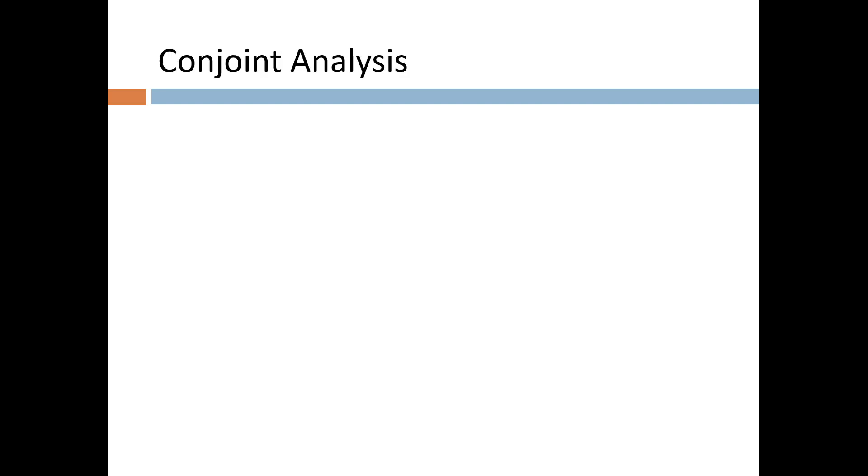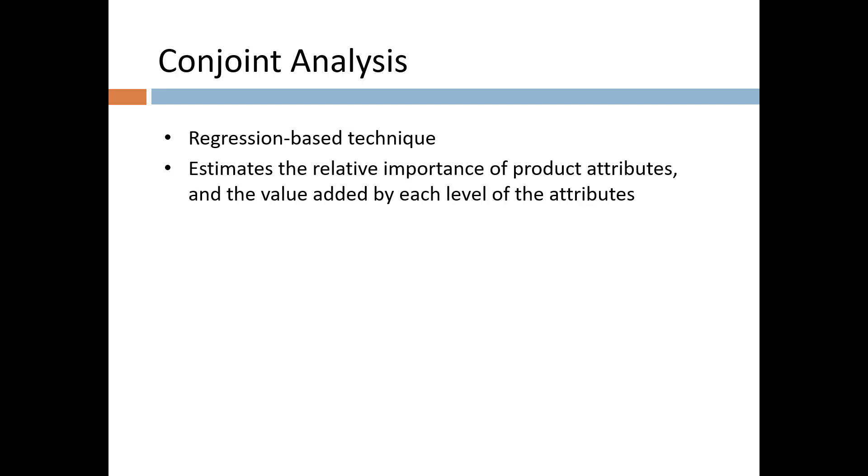Let's take a quick overview of Conjoint Analysis before diving into the details. It is a method that uses regression to analyze preferences. Regression allows us to estimate the relative importance or utility of product attributes and the value added by each level of the attributes. This allows us to understand the trade-offs people make between attributes.